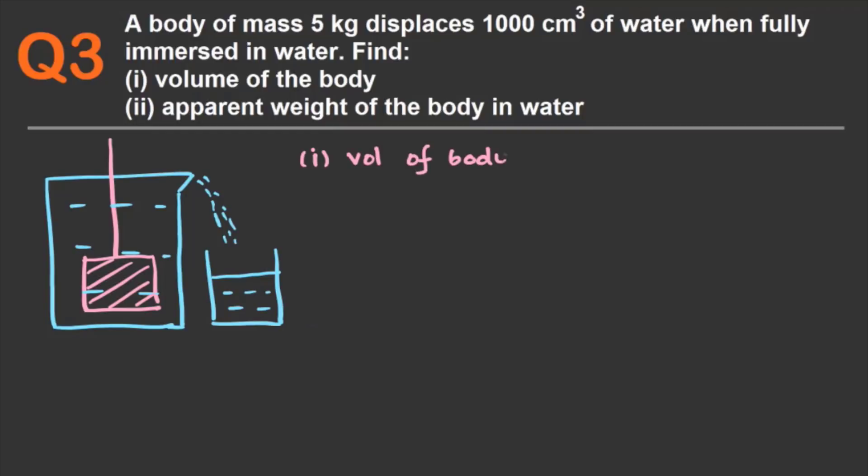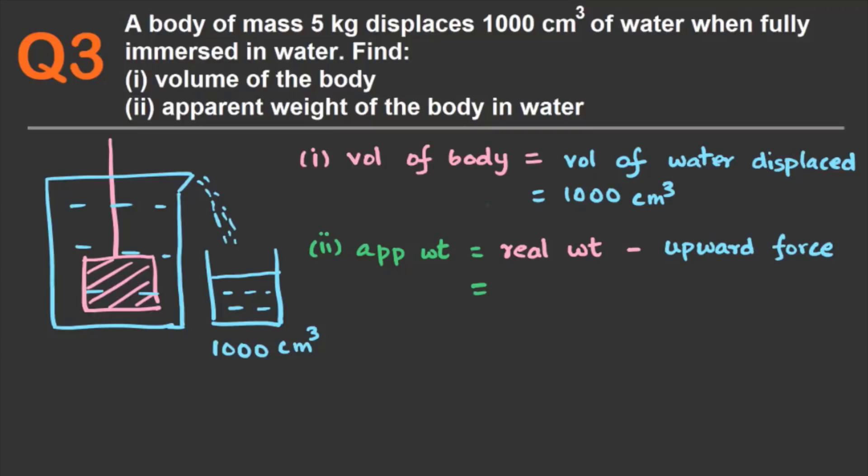The volume of the body is the volume of the water it displaces. So it's going to be thousand centimeter cube. The apparent weight of the body is equal to the real weight minus the upward force. Since we are given the mass of the body, the real weight in air will be m into g, where g is the acceleration due to gravity.